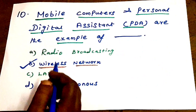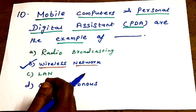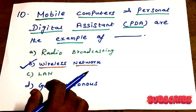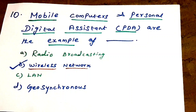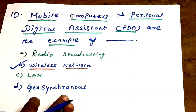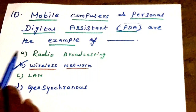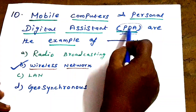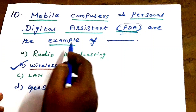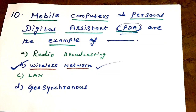The Computer Networks subject typically has 5 to 6 questions — around 12 marks — and is considered easy. It covers UG, PG, and MPhil levels. If you are using a computer or mobile computer, such as a Personal Digital Assistant (PDA), those are examples of wireless networks. Wireless networks include PDA and mobile computers as examples.